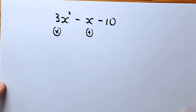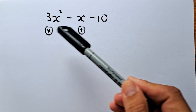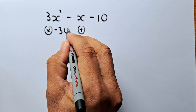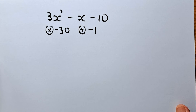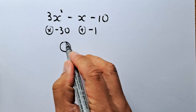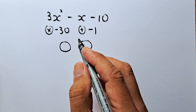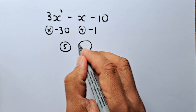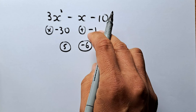The second example is 3x squared minus x minus 10. Again, you need to find the multiplication number and the addition number. The multiplication number is 3 times minus 10, which is going to be minus 30. And the addition number is going to be minus 1. So you need to find 2 factors that multiply to give you minus 30.